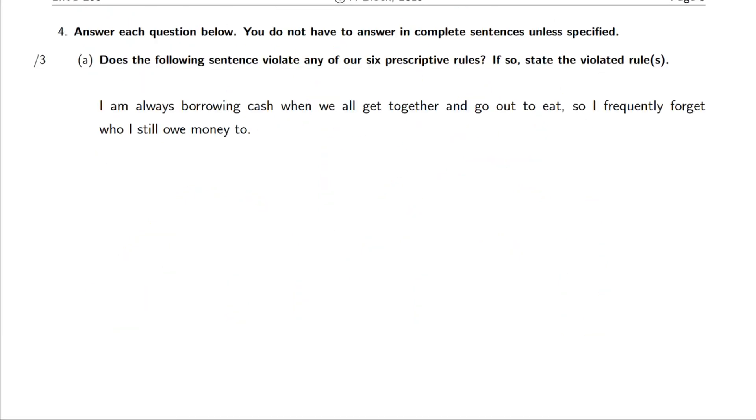And finally, the last section is the short answer question, and I won't write all of these down completely. All of the solutions are detailed in the written guide, but I will explain these and point things out. The first question happens to do with whether the following sentence violates any of our six prescriptive rules, and if so, what rules are they? Let's look at this entire sentence. I am always borrowing cash when we all get together and go out to eat, so I frequently forget who I still owe money to.